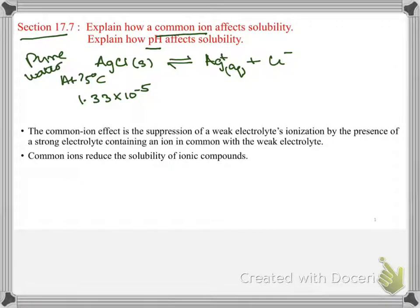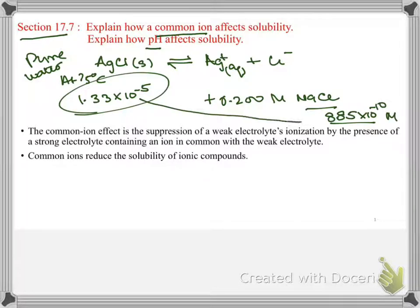But what happens if you add 0.200 molar NaCl solution into it? Then the KSP value changes to 8.85 times 10 to the negative tenth molar. The value is decreasing from 1.33 times 10 to the negative fifth to 8.85 times to the negative tenth, which means molar solubility is getting lower.